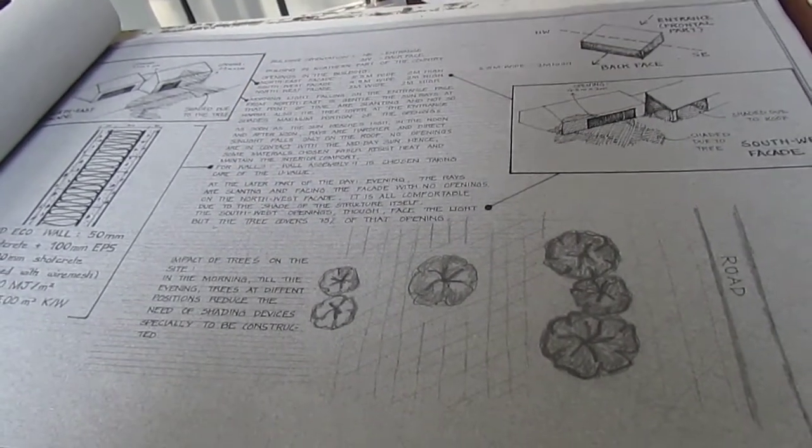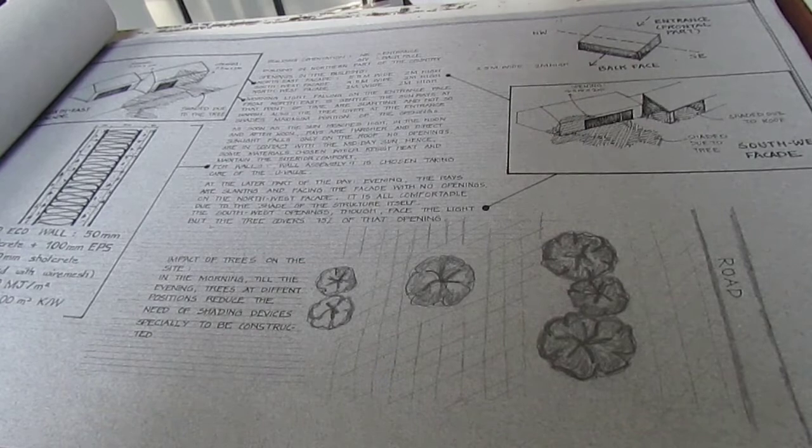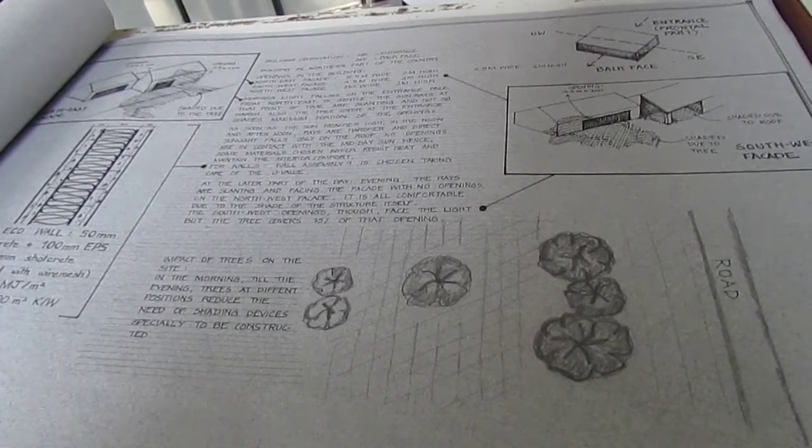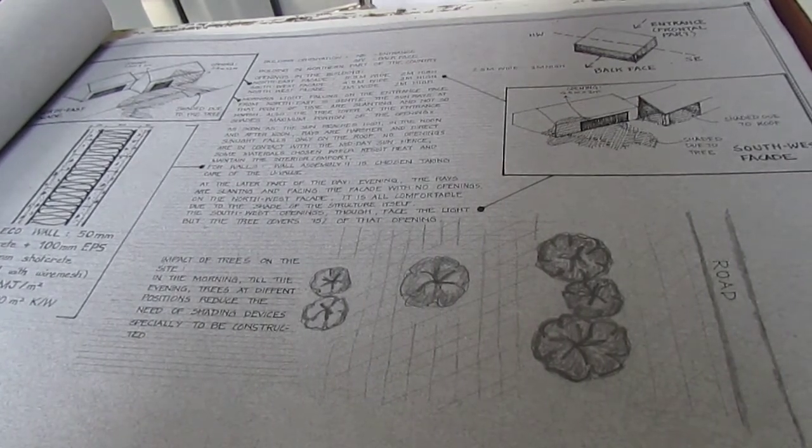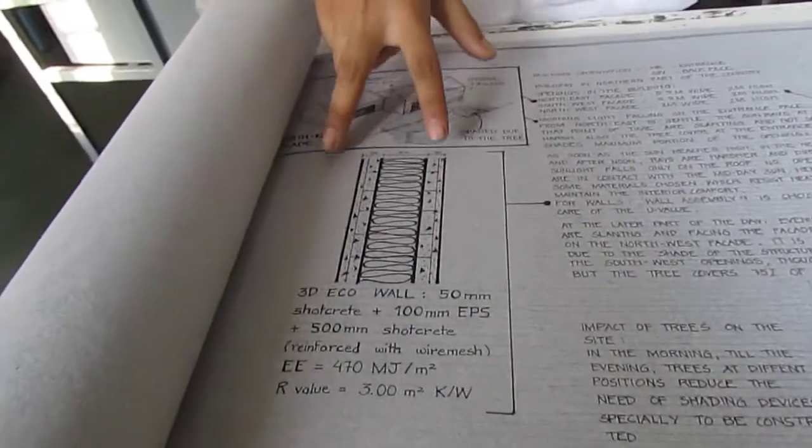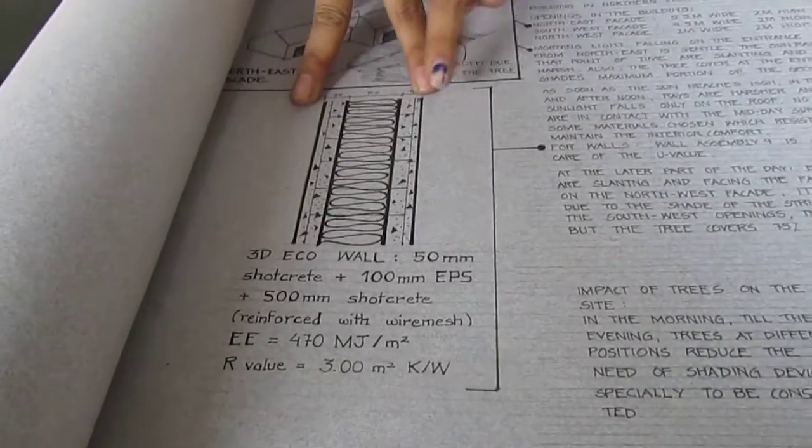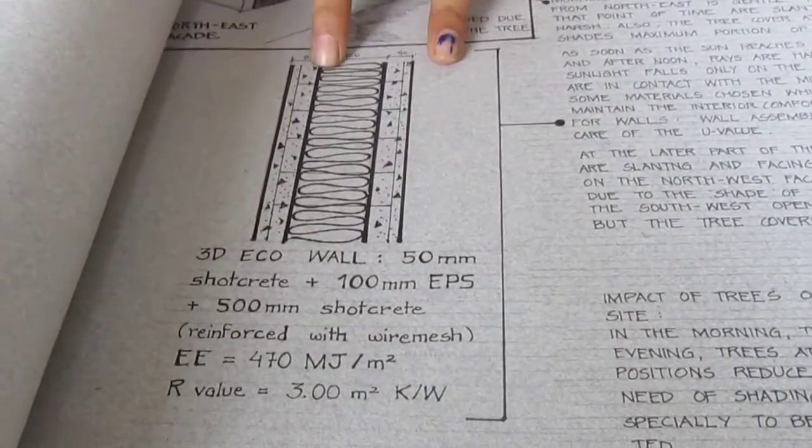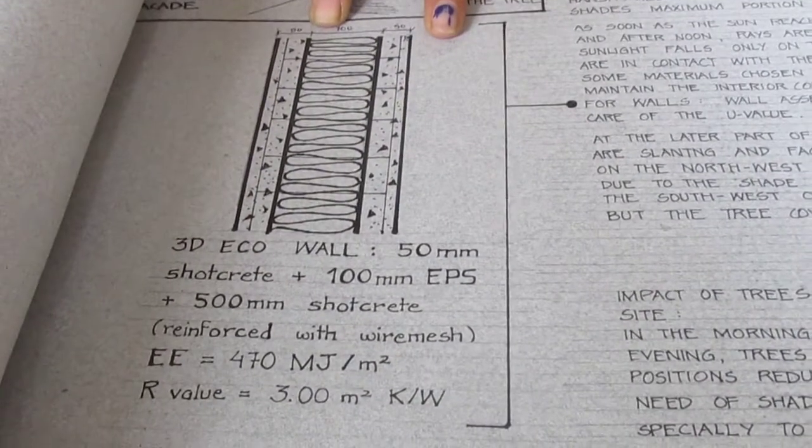My façade was shaded well and no harsh sunlight was coming in. The only concern was what to do about the heat coming from the top when the sun is at the top. So I decided to take a wall assembly and roof assembly, which is the 3D eco wall, which will trap my heat and not let it come inside and also maintain the comfort of the building.